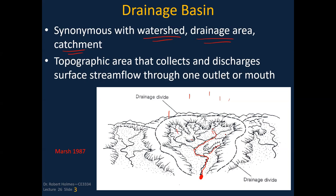If it were raining hard enough and long enough, where would the contributing area be? You can see high areas where if water falls on this side of the drainage divide, it runs off into my area above this outlet point shown in red. If a drop of water falls on the other side of that line, it runs off into another watershed. So the drainage basin is the topographic area that collects and discharges surface stream flow from one outlet or mouth.